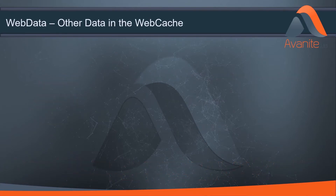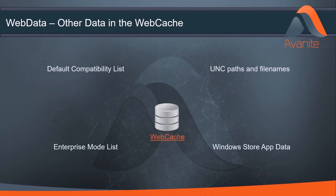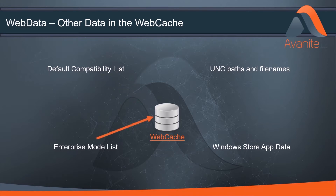Examination of the web cache reveals other application-specific data. Internet Explorer has a compatibility mode feature allowing older websites to render correctly in it. There's a default list which is downloaded to the web cache, and if using enterprise mode, that list is also stored within the web cache. The closeness of Windows Explorer to Internet Explorer is also evident as we can see UNC paths and file names of locations and files accessed.